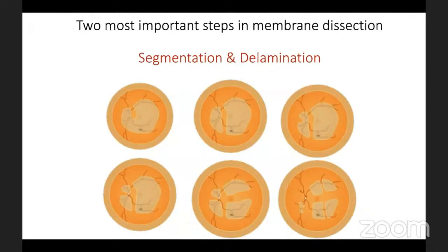Once the approach — inside-out or outside-in — is decided, there are two key steps for membrane dissection. Segmentation means cutting a large membrane into pieces rather than removing it en bloc. Once a piece is created, it is separated from the retina, which is called delamination. Let me walk you through some videos demonstrating this.